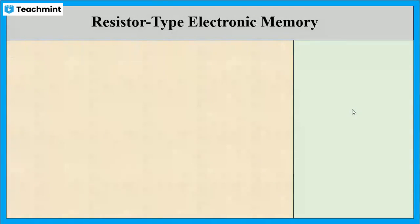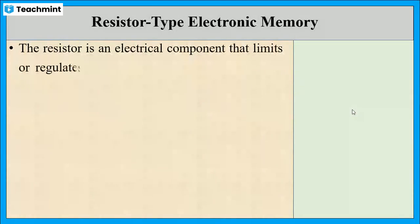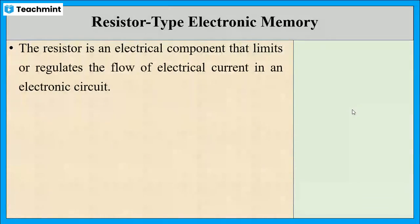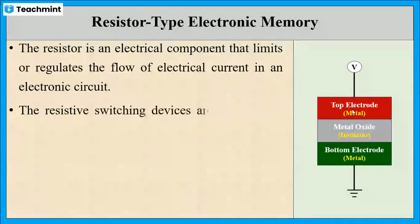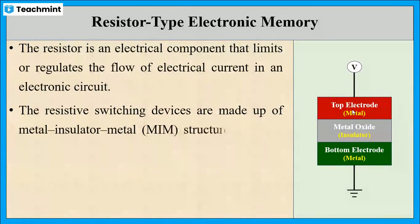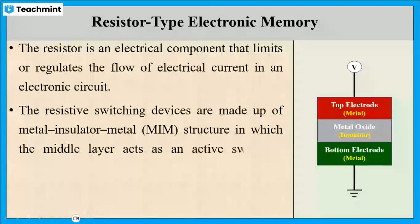Third type is resistor type electronic memory. A resistor is an electrical component that is used to restrict the flow of electrical current in an electronic circuit. The resistive switching devices consist of an insulating layer like metal oxide, which is sandwiched between two metal electrodes.